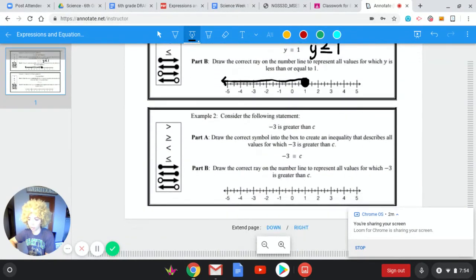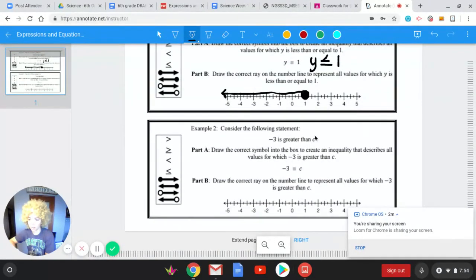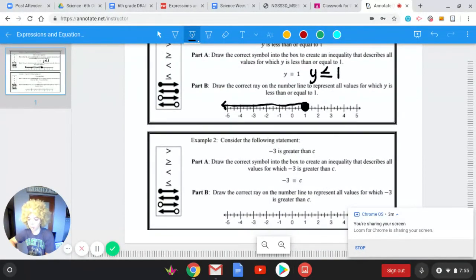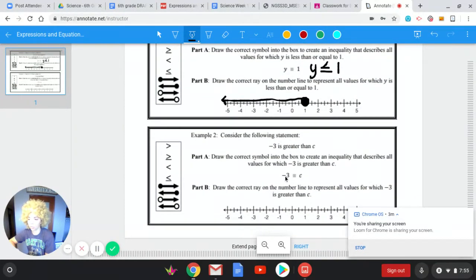Now we're going to look at example two which says negative three is greater than c. So our first step is to do what we did in part A up here and to create our inequality statement. So they have it written with the number first instead of the variable. We will write it that way and then we'll switch it. So negative three is greater than c. So we know that the alligator is going to be eating the negative three. It's going to be facing that direction. Negative three is greater than c.